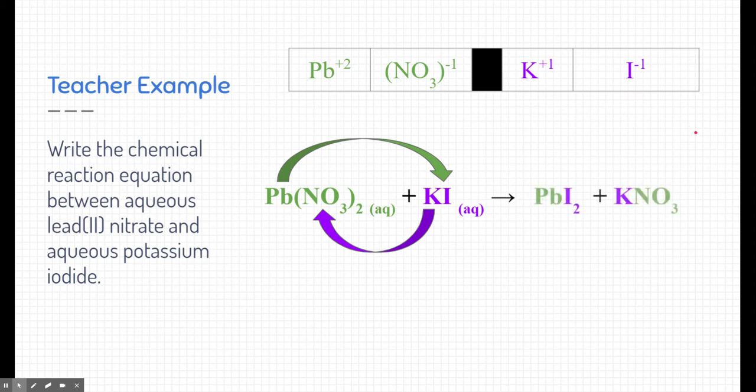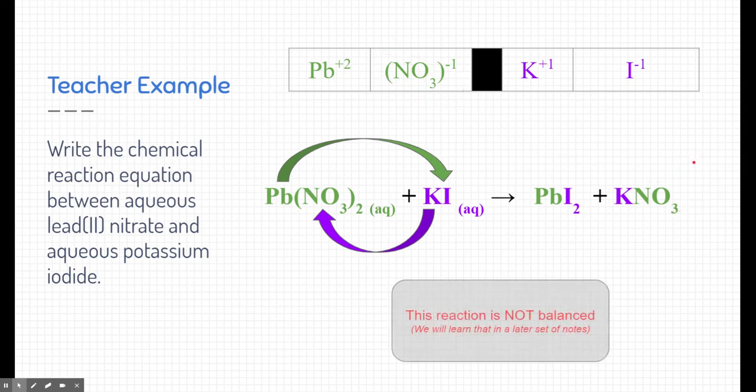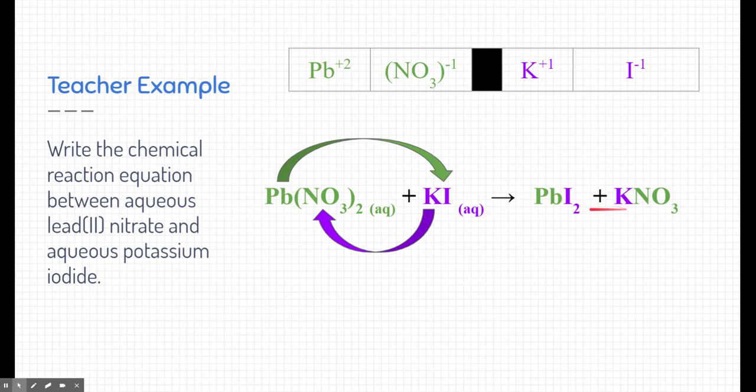So when lead goes with iodine, lead being a positive two and iodine being a negative one, we need two iodines in order to counteract the lead. So this is what the product of this new solution is going to be. Potassium is a positive one charge and nitrate is a negative one charge so we only need one of each of those in order to make this compound. And so here are the two products of this reaction.